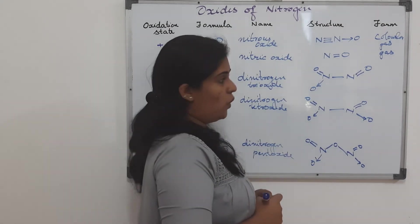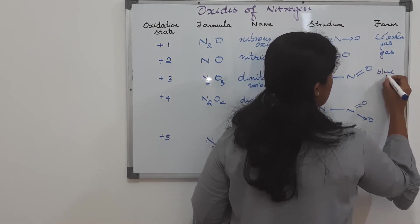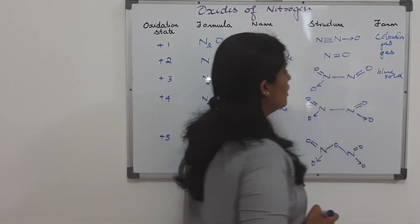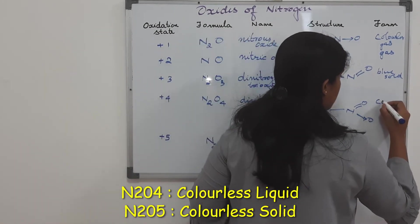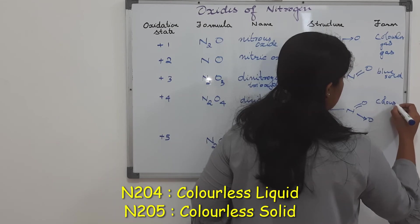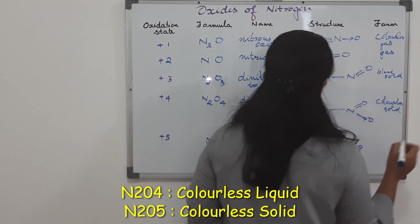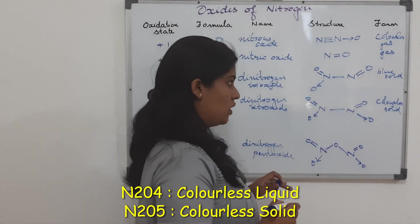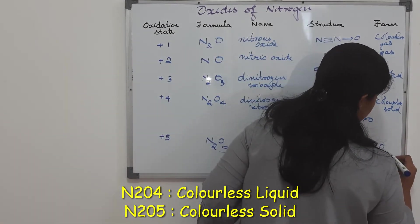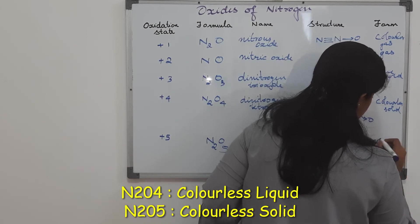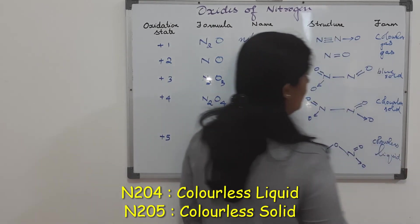Dinitrogen trioxide is a blue solid. And dinitrogen tetroxide is a colorless solid. And finally, dinitrogen pentoxide is a colorless liquid.